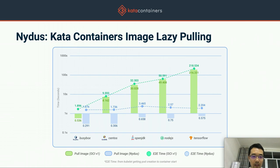We have also integrated a CNCF container image pooling project called NIDAS into Kata Containers. With it, we can launch Kata Containers in constant time — less than 5 seconds — regardless of the container image size. Without this pooling, we would have to pull the entire container image, which costs a lot of time when first starting Kata Containers.